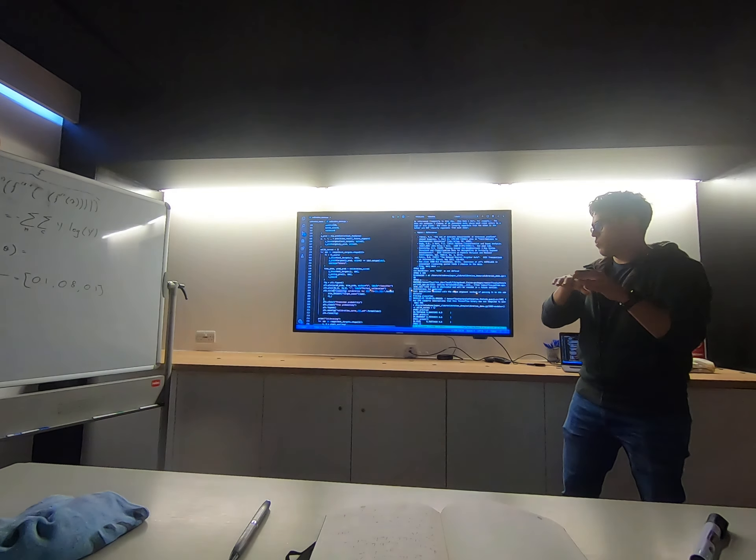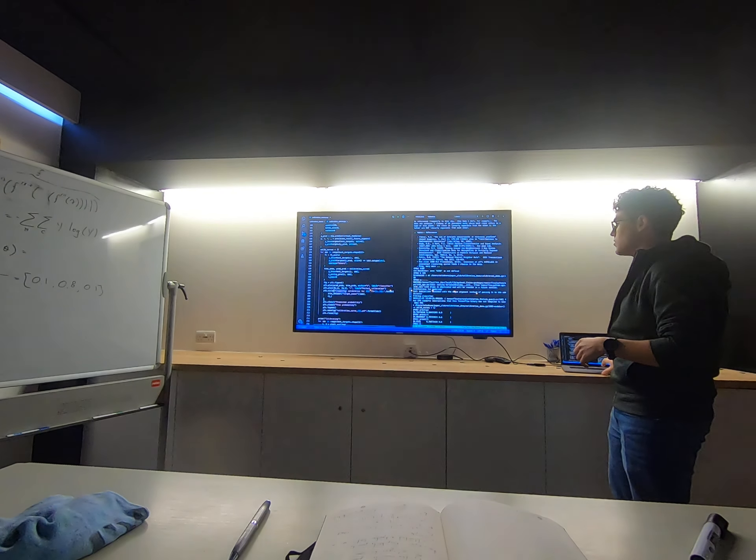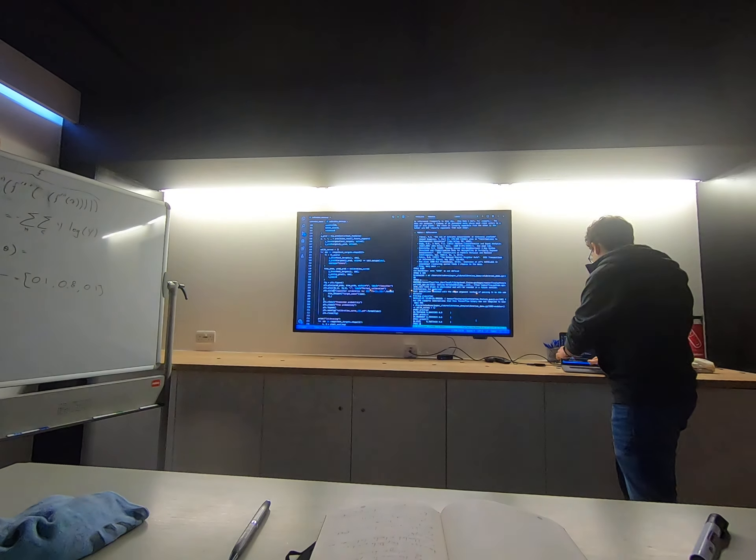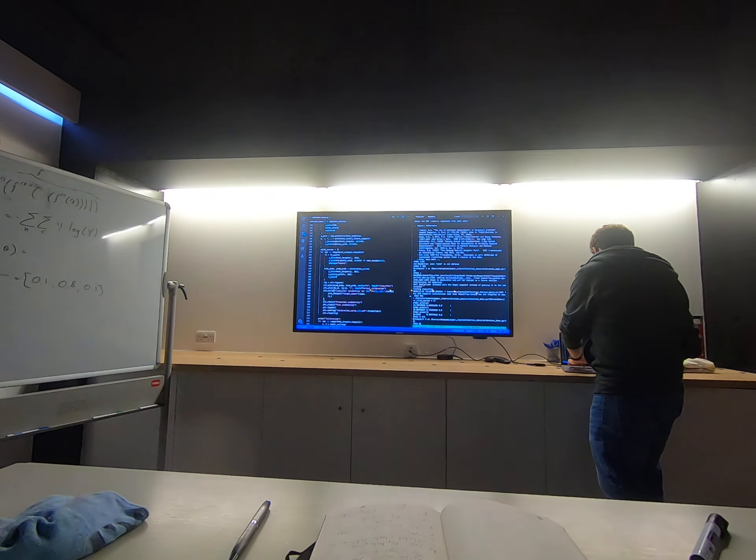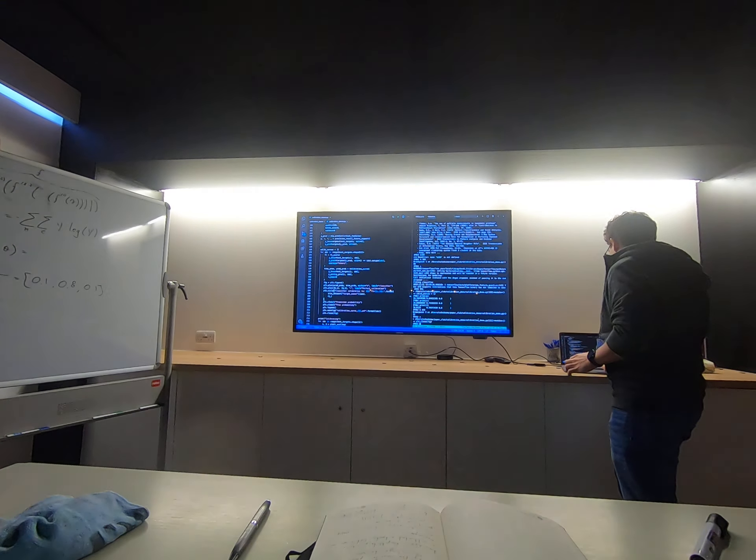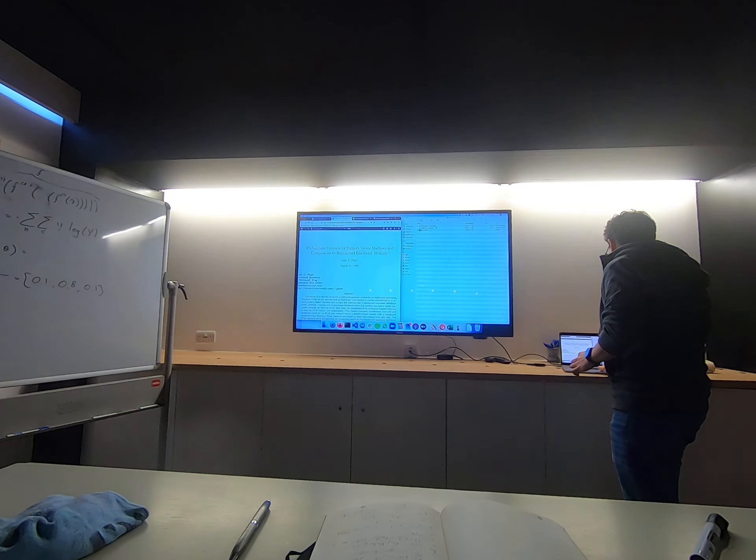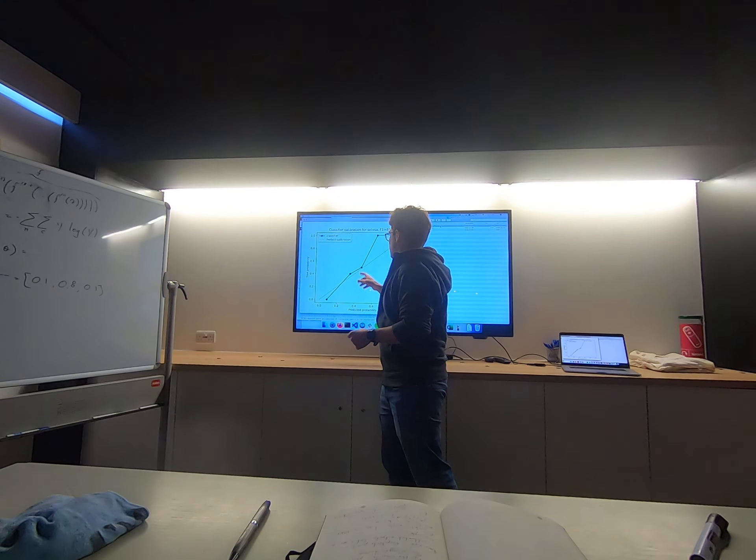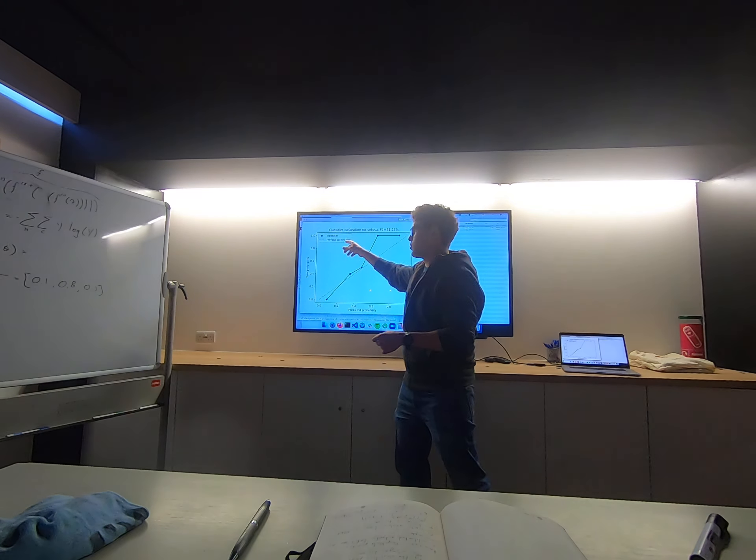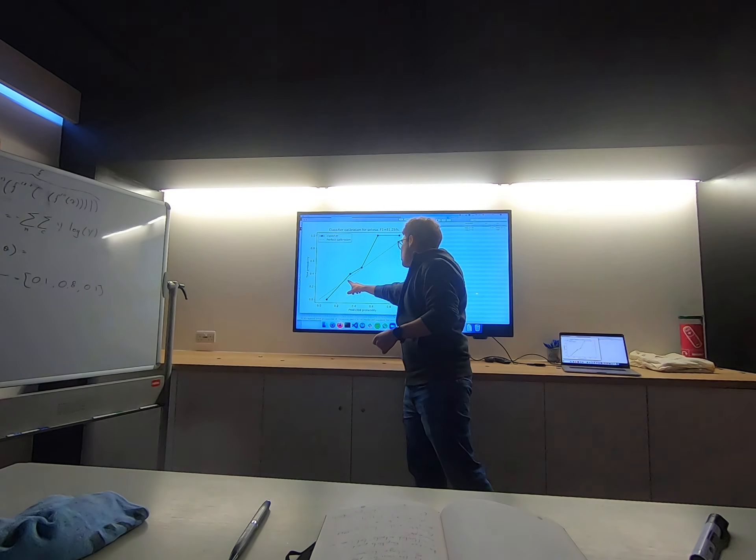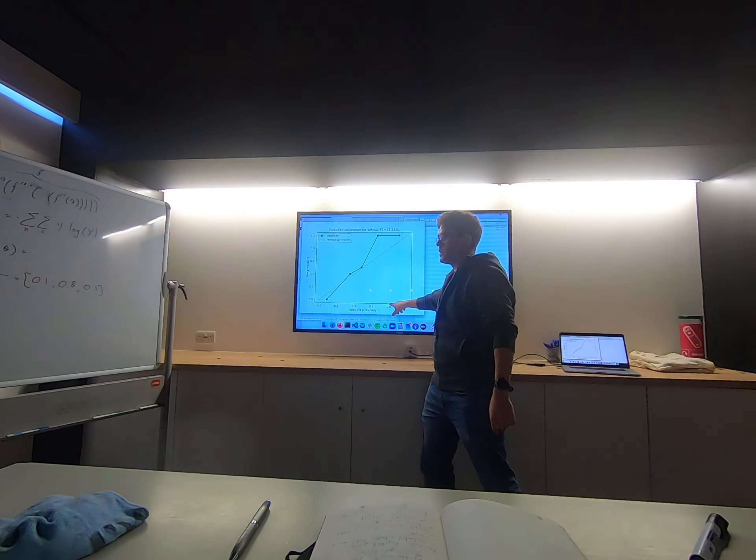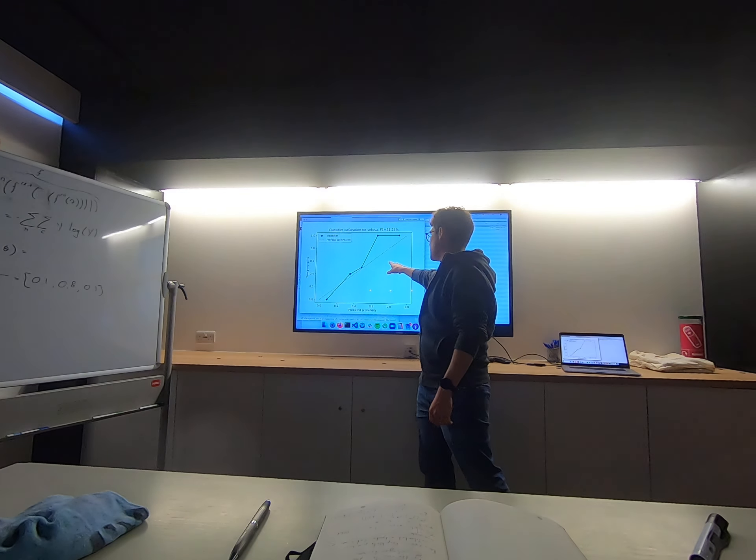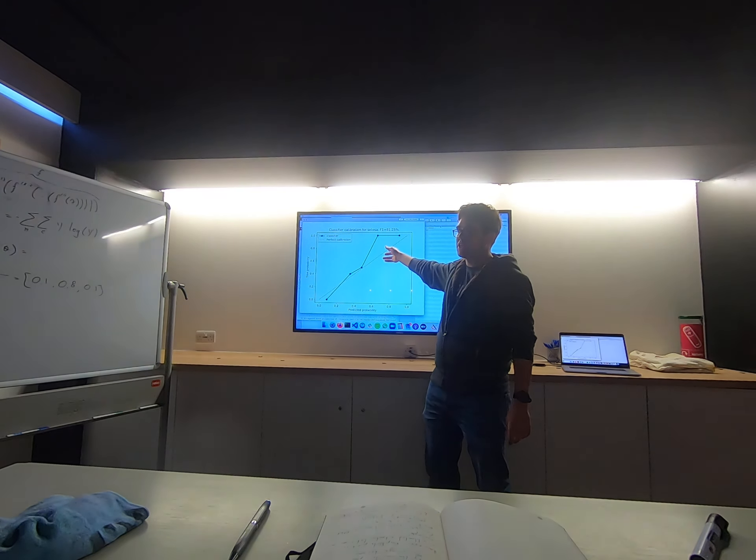And then it calculates how many of those examples were actually correctly classified, and it produces a curve. We're going to see it in a second, but it produces a curve where you can see the calibration. Okay, so let's do it for the first class. So this is for the first class. Yeah, so the first class is called setosa.